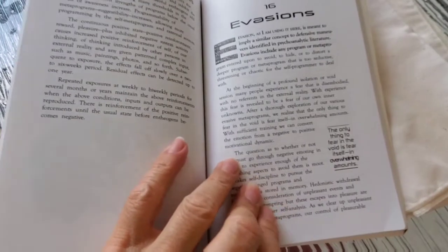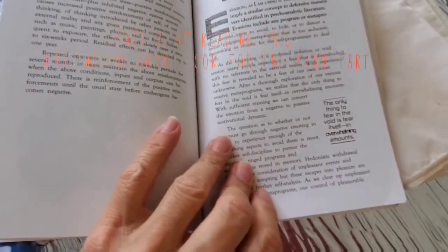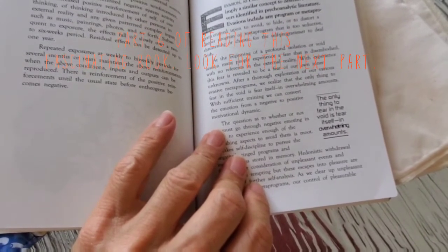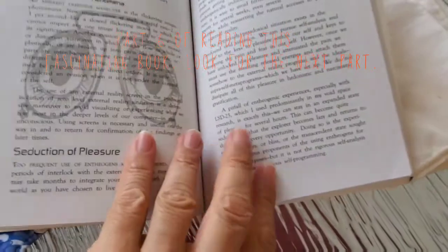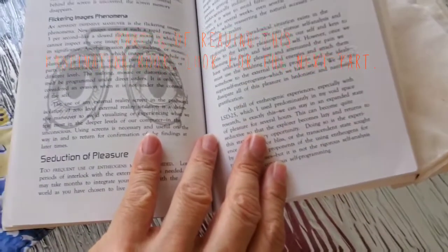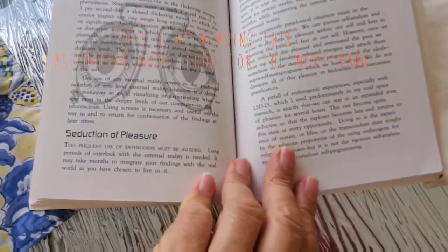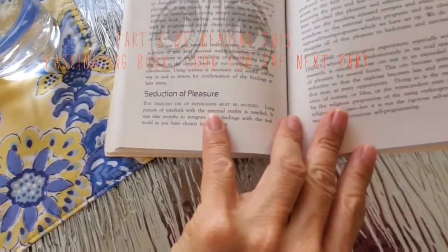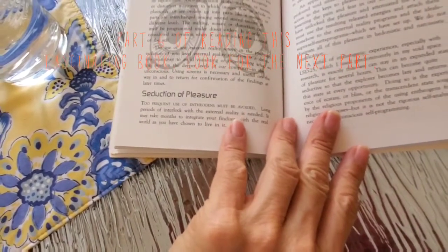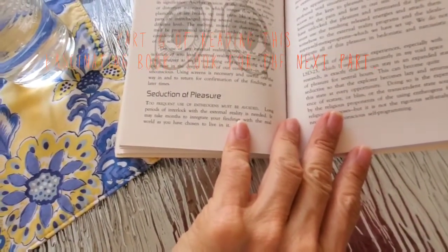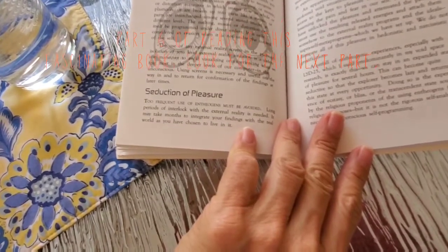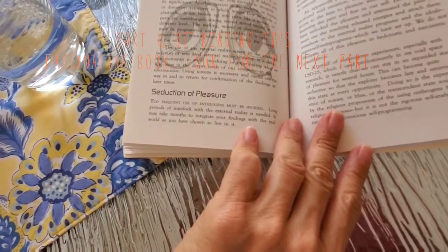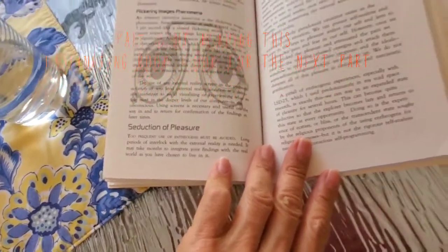The only thing to fear in the void is fear itself in overwhelming amounts. Seduction of pleasure. Too frequent use of entheogens must be avoided. Long periods of interlock with the external reality is needed. It may take months to integrate your findings with the real world as you have chosen to live in it.